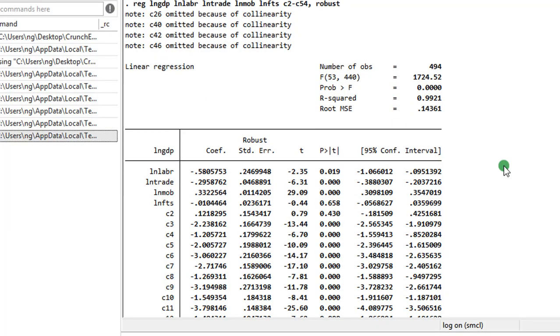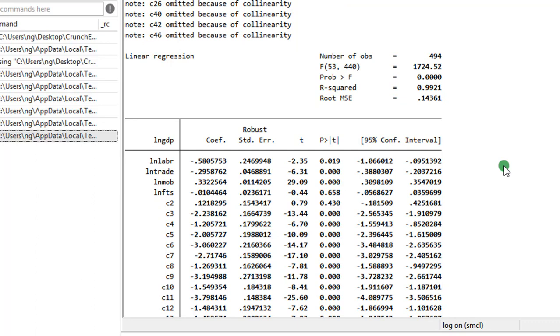This is our result from executing the one-way error components model with varying intercepts over countries. You can see here now that trade that was not significant in the pooled OLS is now significant at the 1% level, even though it's negative. Labor that was significant at 1% level is now significant at the 5% level. The significance has reduced to 5%, though the sign is still negative. For mobile phone, it's still positive at the 1% level, but look at fixed telephone, it's not significant and it's even negative.